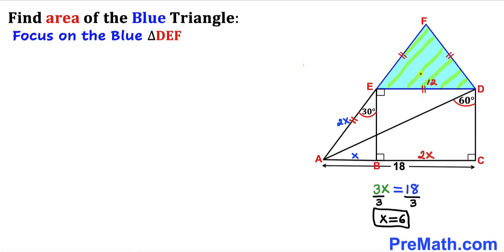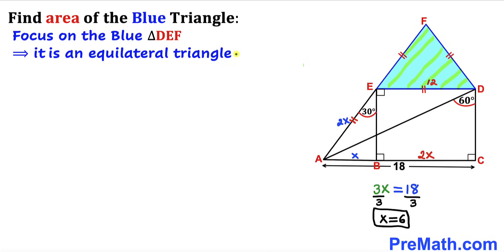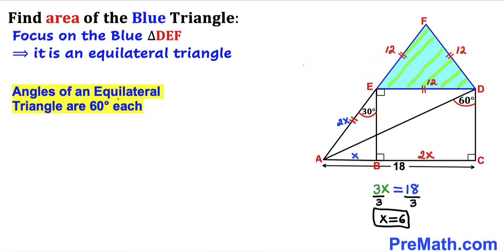Here's our next step. Let's focus on the blue triangle DEF. We can see all three side lengths are equal, so this is an equilateral triangle. We know this side length is 12, so therefore all sides are going to be 12 units. Let's recall another crucial fact: angles of an equilateral triangle are 60 degrees each, so each angle is 60 degrees.